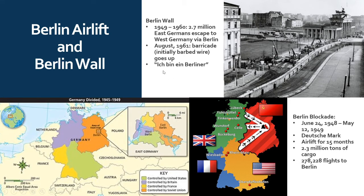It's always a sign that your political and economic system may not be great when you have to build walls to keep your own people in. The Berlin Wall went up in 1961 and became the symbol of the Cold War. Then there's "Ich bin ein Berliner" — something JFK, President John F. Kennedy, said when he visited Berlin, meaning "I am a Berliner" — in other words, I am one of you, I sympathize with you and your cause.